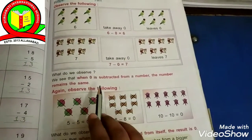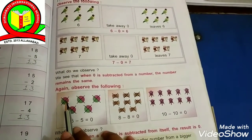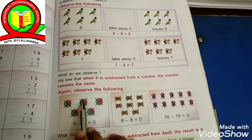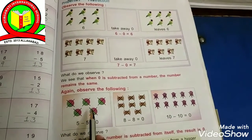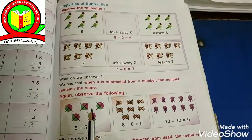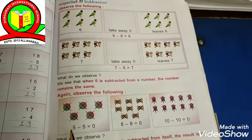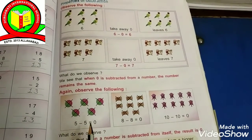Now again observe the following. How many butterflies are here? 1, 2, 3, 4, 5. Let's take away 5. So 5 minus 5 is equals to 0.